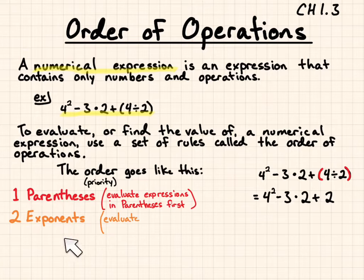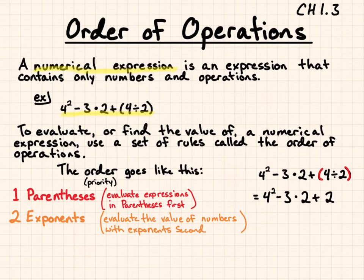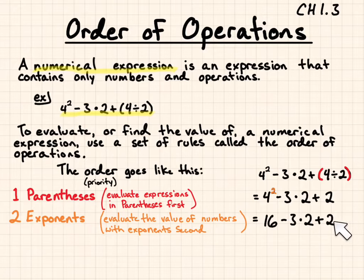Then we go for exponents — second, you evaluate the value of numbers with exponents. I see that I have 4 squared. 4 squared is 4 times 4, which gives me 16. So now I replace 4 squared with 16 and continue evaluating.